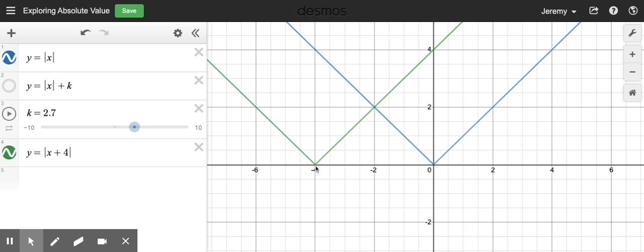So my vertex moved here from an X value of zero down here to an X value of negative four. And I just want to explore this pattern, this counterintuitive pattern, by following the path of one point.